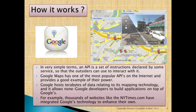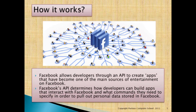Google has terabytes of data relating to its mapping technology and allows non-Google developers to build applications on top of Google's platform. For example, thousands of websites like NYTimes.com have integrated Google technology to enhance their own. Facebook is another good example — Facebook allows developers through its API to create apps that have become one of the main sources of entertainment on Facebook.